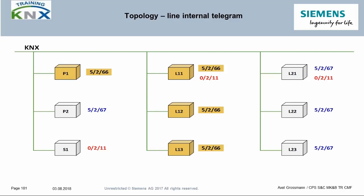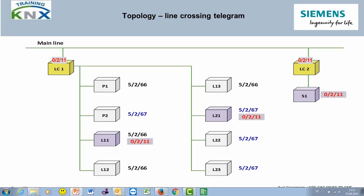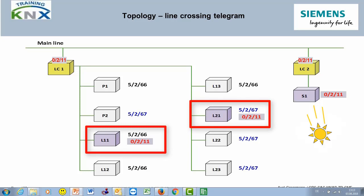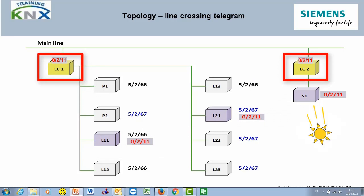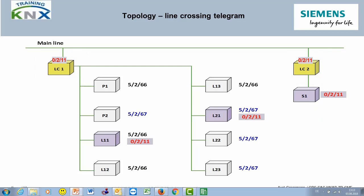This picture shows the internal communication within the line segment. It is only important to note that the corresponding push buttons and actuator channels are connected to the same group addresses. Now looking at the same function across three lines: the light sensor S1 is now on subline 2, while the push button and actuators continue to be on subline 1. The luminaires L11 and L21 are controlled by this light sensor. Therefore, the corresponding group address 0211 must be entered in the filter table of both couplers.